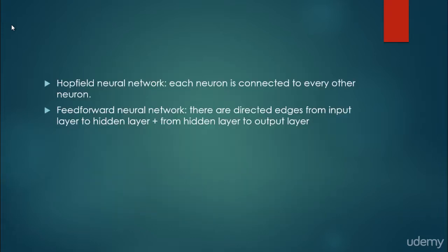So there are two main neural networks, I mean there are several neural networks, but the two most important are the Hopfield neural network, where each neuron is connected to every other neuron with an undirected edge.